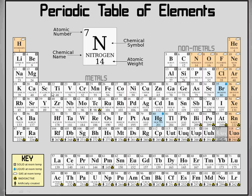So potassium, calcium, and scandium all have four energy shells. In this class, you're only required to understand elements 1 through 20. As we go from left to right in their periods, they are in numerical order by atomic number. Hydrogen has atomic number 1 — one proton. Helium has atomic number 2 — two protons. Lithium has atomic number 3 — three protons, and so on.